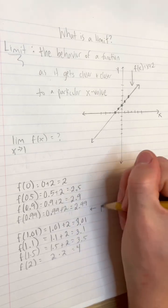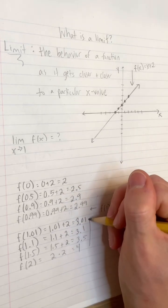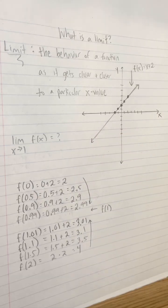From either direction, where do the outputs seem to be heading? 3. The limit of this function as x approaches 1 is 3.